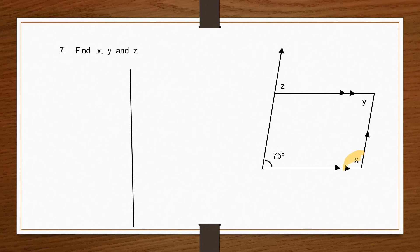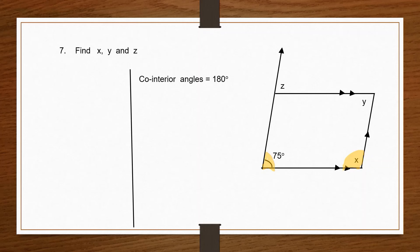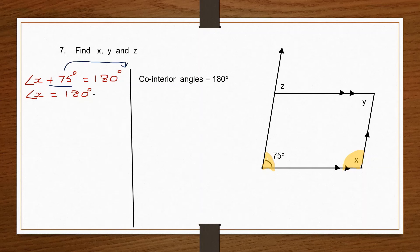Now let's find angle X. We have X here and 75 degrees here — they are co-interior angles. Co-interior angles add up to 180 degrees, so angle X plus 75 degrees equals 180 degrees. Therefore angle X equals 180 minus 75, which is 105 degrees.